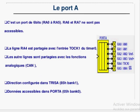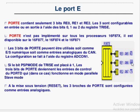Concernant le port A, il est constitué de 6 lignes avec un partage entre les lignes d'entrée-sortie numériques et les entrées analogiques. Par exemple, RA0 peut être utilisée comme entrée numérique du port ou comme entrée analogique AN0 à convertir. Autrement dit, le convertisseur analogique numérique présente ses entrées sur le port A et sur le port E, avec une certaine configuration à préciser.